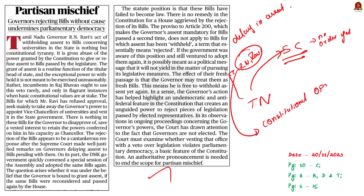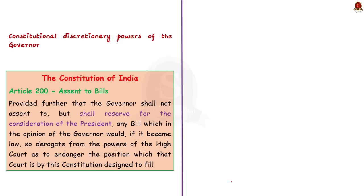The author says that the Supreme Court must examine the constitutional powers of the governor before pronouncing judgment. In our discussion, let us revise the important constitutional discretionary powers available to the governor. The Constitution of India has granted some authority to the governor to act on his own discretion. While acting at his discretion, the governor is not bound to act based on the recommendation of the Council of Ministers of the state.